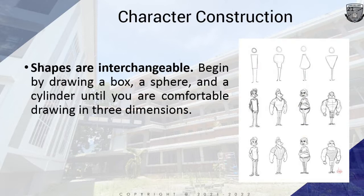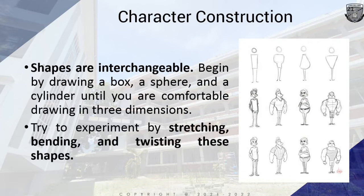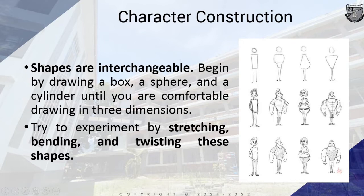Shapes are interchangeable, meaning we begin by drawing a box, a sphere, and a cylinder until comfortable drawing in three dimensions. Keep practicing these shapes and experiment by stretching, bending, or twisting them to create objects. Once we create the basic shapes, we can outline our drawing using those basic shapes. Then once we have created the outline, we can create the cleanup version of these outlines.